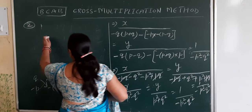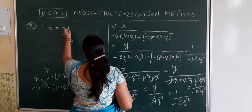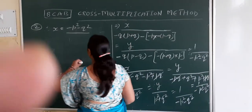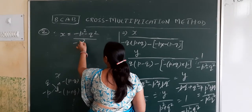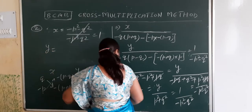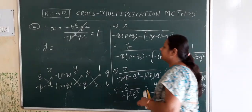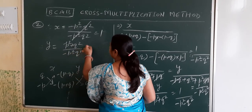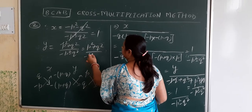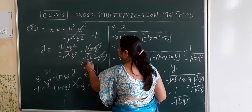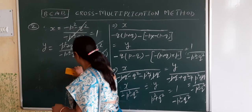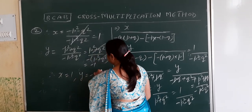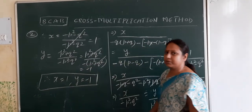And now finally, comparing x with 1: x equals minus p squared minus q squared divided by minus p squared minus q squared, so x equals 1. And y equals p squared plus q squared divided by minus p squared minus q squared, which simplifies to y equals minus 1. So that is the solution of the equations using the cross multiplication method.